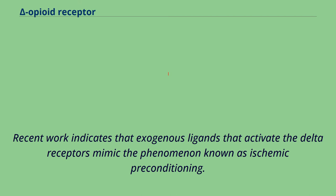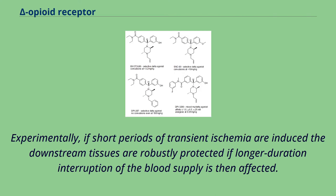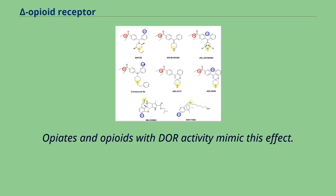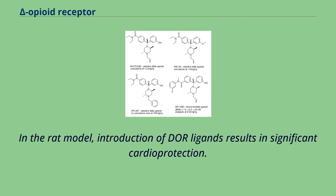Recent work indicates that exogenous ligands that activate the Delta receptors mimic the phenomenon known as ischemic preconditioning. Experimentally, if short periods of transient ischemia are induced, downstream tissues are robustly protected if a longer duration interruption of the blood supply is then affected. Opiates and opioids with DOR activity mimic this effect. In the FRET model, introduction of DOR ligands results in significant cardioprotection.